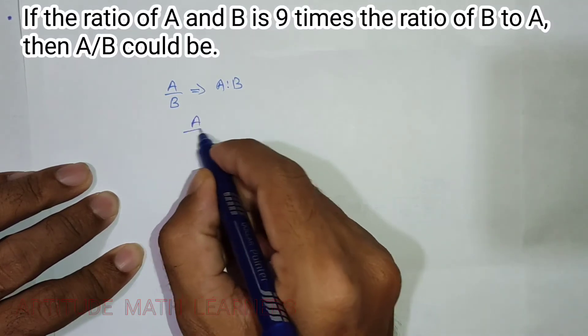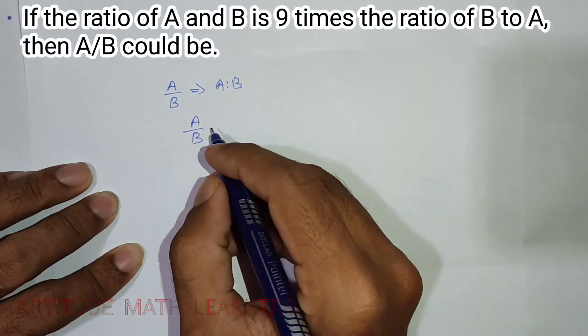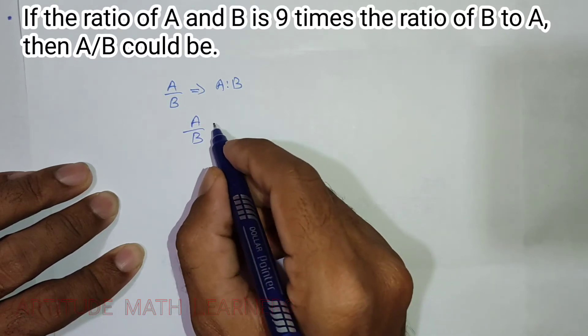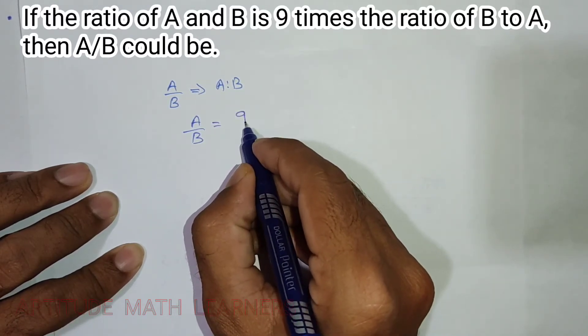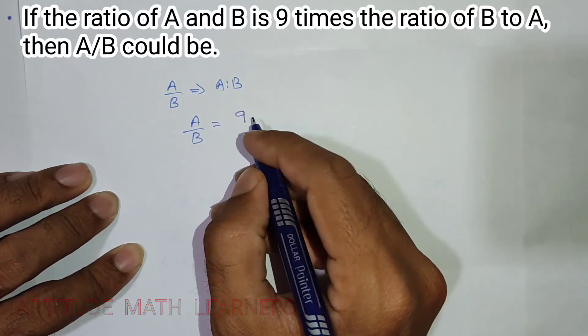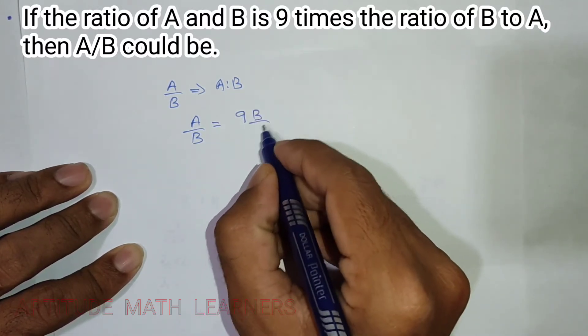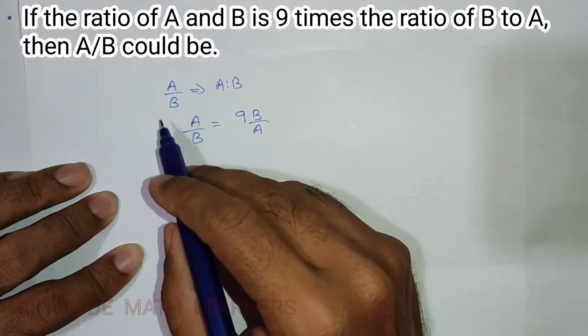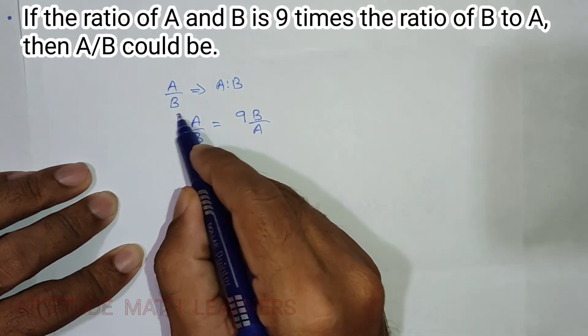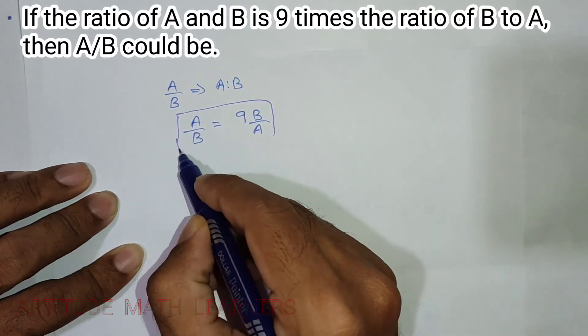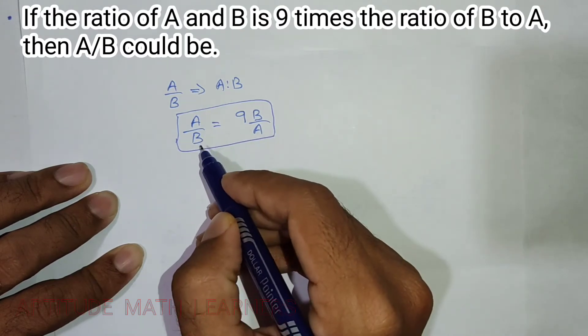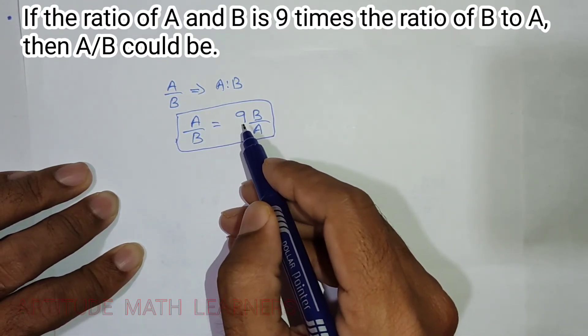A upon B is 9 times the ratio of B to A, so B to A. The ratio of A to B is equal to 9 times the ratio of B to A. We have to find A upon B.